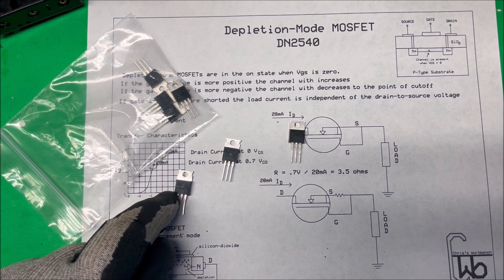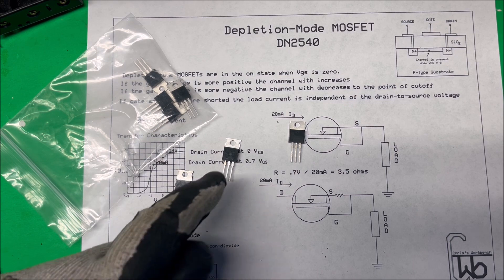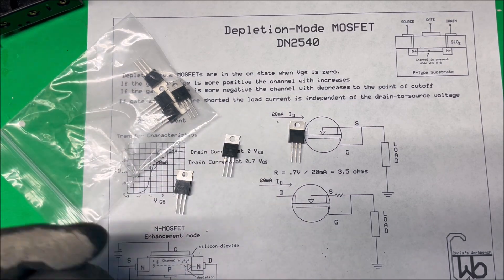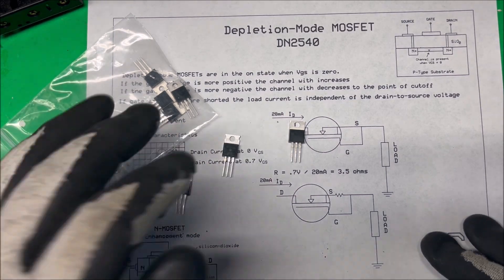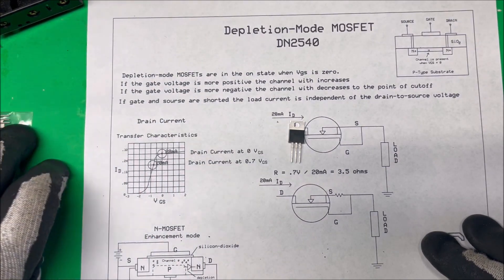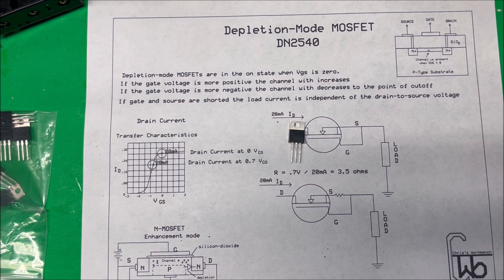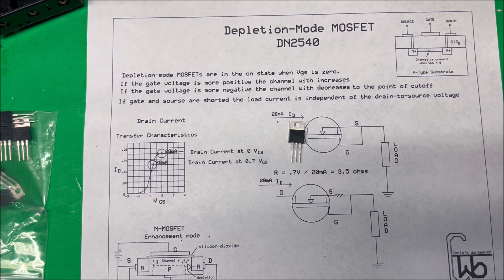I bought these that were supposed to be gate controlled SCRs. They're not, they're just plain SCRs. And this is an enhancement mode MOSFET, so they still work as enhancement mode MOSFETs but they're not depletion mode, which cost more money. Anyway, we have one good one here to work with. The depletion mode MOSFETs, unlike the enhancement mode...